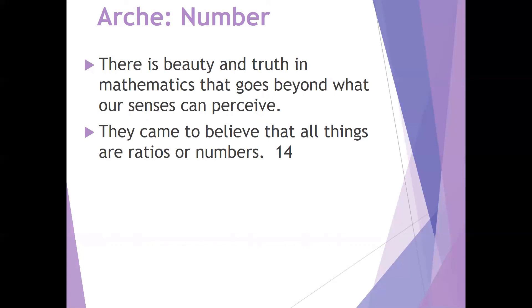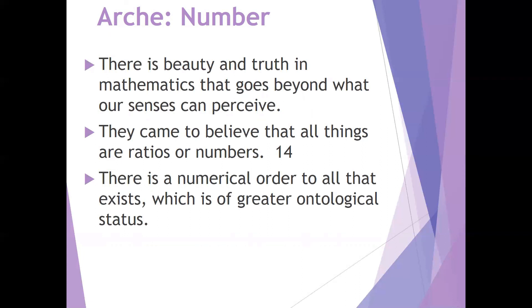And so they came to believe that all things that exist in the material realm are ratios or numbers. And they had ideas like justice or marriage or any number of ideas that they thought were correlated to ratios or numbers of some sort. And so you might say that the arche of all things is numbers. There's a numerical order to all that exists, and that numerical order has greater ontological status than the physical realm.